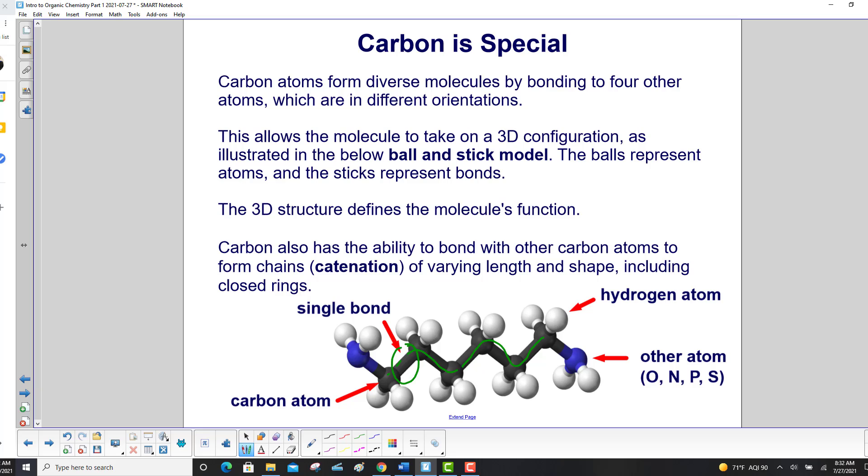This is a single bond. If we had a double bond, we would have two sticks connecting the atoms. Here's carbon, kind of in that grayish color. Hydrogen, typically in white, and then other atoms will be in different colors, such as oxygen, nitrogen, phosphorus, and sulfur.